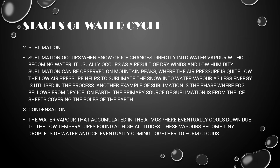Sublimation can be observed on mountain peaks where the air pressure is quite low. The low air pressure helps to sublimate the snow into water vapor, as less energy is utilized in the process. Another example of sublimation is the fog that billows from dry ice. On earth, the primary source of sublimation is from the ice sheets covering the poles.